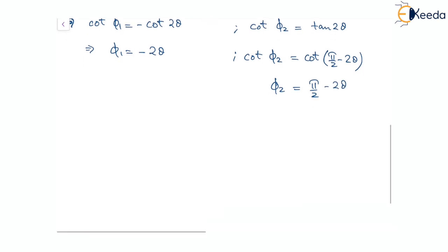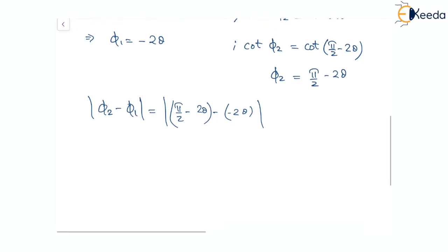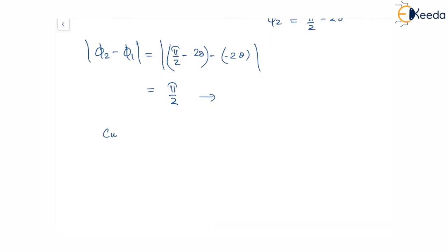From here, the angle difference between the two curves is φ₂ − φ₁ = (π/2 − 2θ) − (−2θ). The 2θ terms cancel, giving φ₂ − φ₁ = π/2. This means the angle of intersection of the two curves is 90 degrees. Therefore, we can conclude that the curves intersect orthogonally, which is what we were required to show.